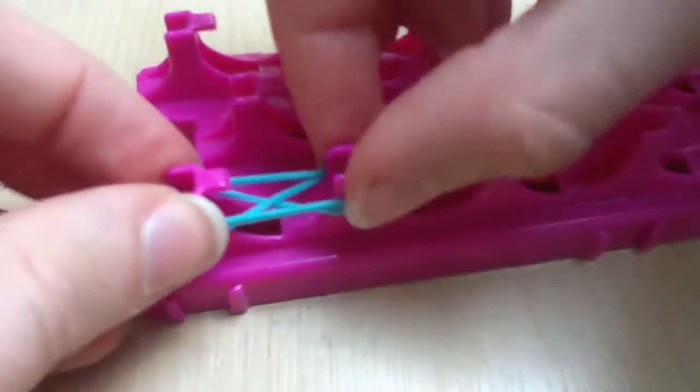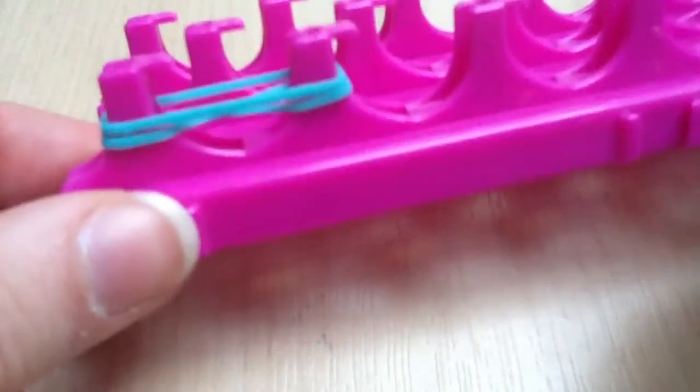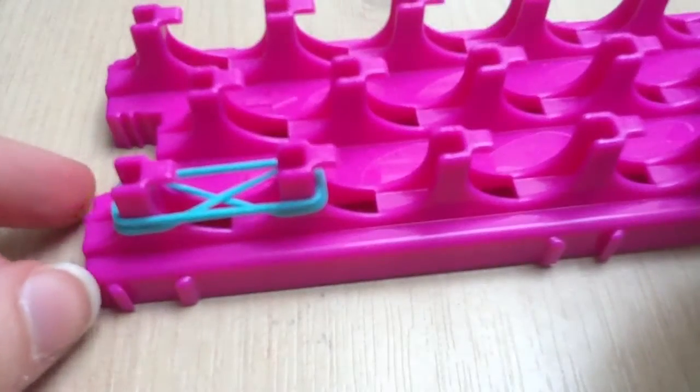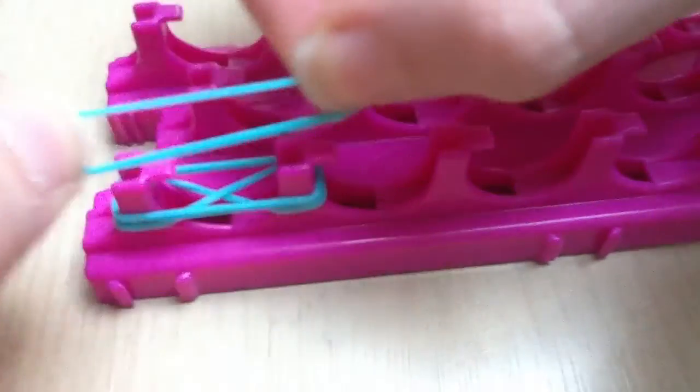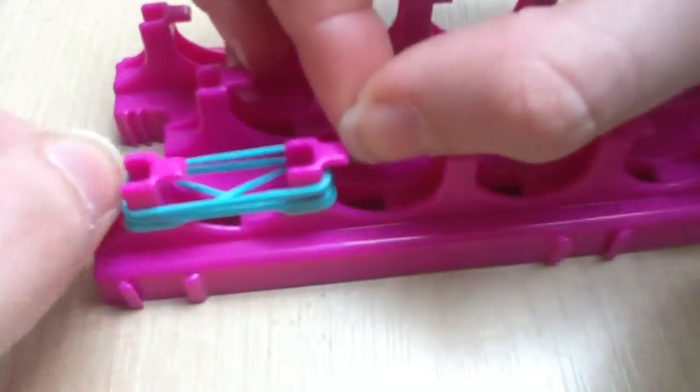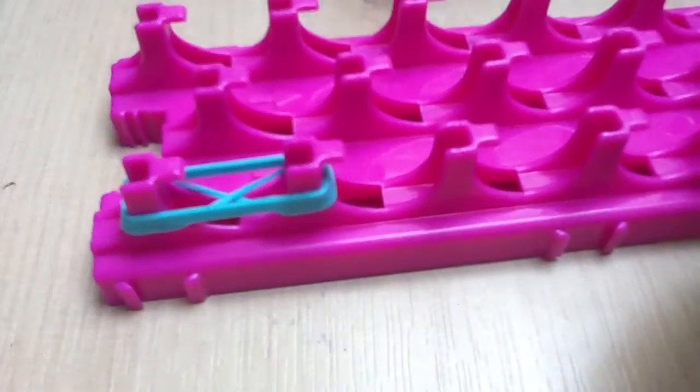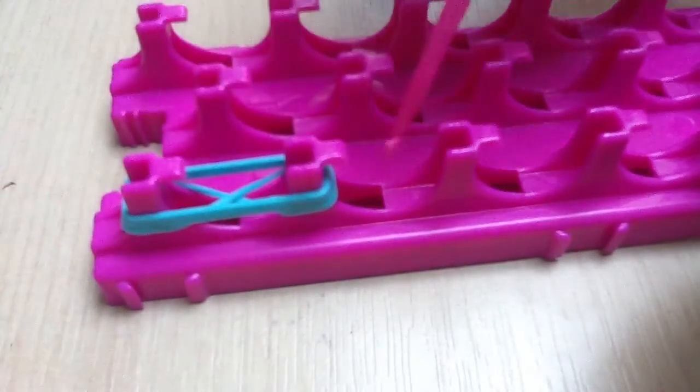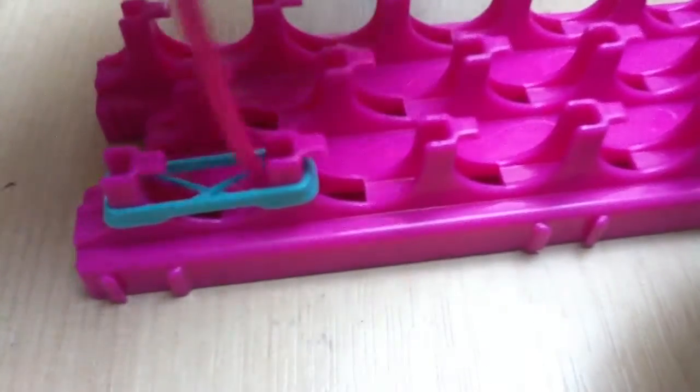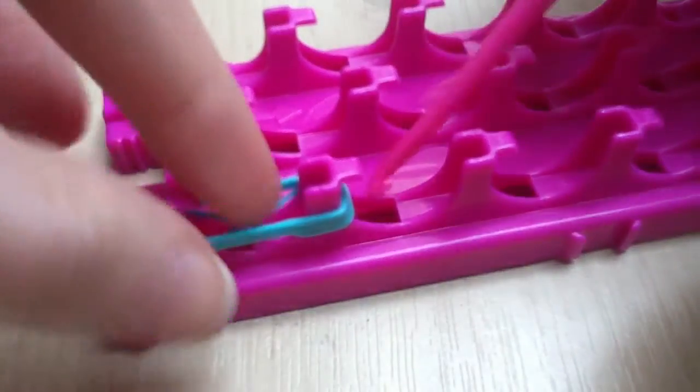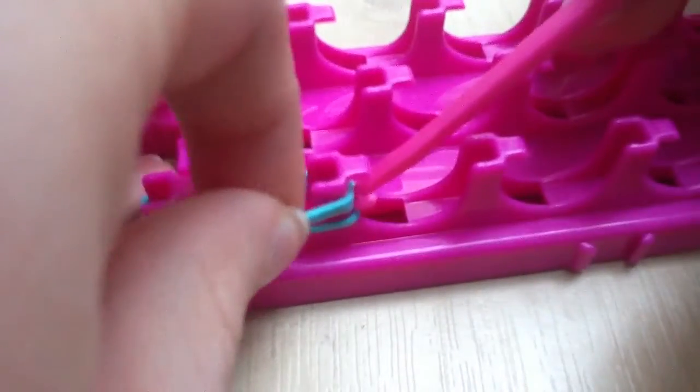Take another rubber band and put that on top as well. Then, using your hook or your fingers, take the bottom rubber band, which is the one that's in a cross. Push all the others down.